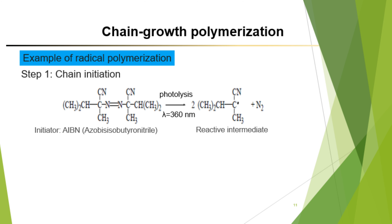For radical polymerization, in chain initiation you have an initiator that generates reactive intermediates. The reactive intermediates must contain a radical, a charge (typically negative), or a lone pair. In chain propagation, the reactive intermediates react with a monomer to generate a longer chain. The radical attacks the beta carbon rather than the alpha carbon due to less steric hindrance — there is steric hindrance at the alpha carbon, so it attacks the beta side. After attacking the beta side, the resulting reactive intermediate attacks another monomer, continuing the chain.